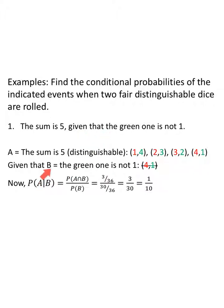The given condition tells us event B: the green one is not one. So we remove the outcome (4,1). The probability of A given B: how many times do we have a sum of five and the green one is not one? Three times. There are thirty-six total rolls. The probability of B — green die not one — removes six outcomes, so thirty out of thirty-six. Dividing the two fractions, the denominators cancel, giving us three-thirtieths, which simplifies to one-tenth.